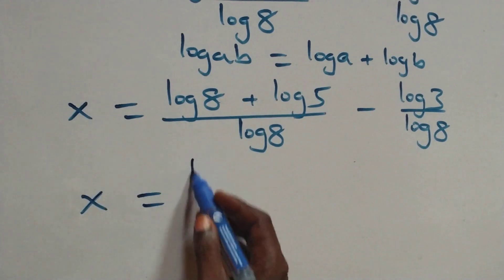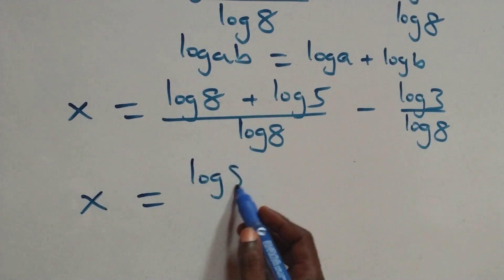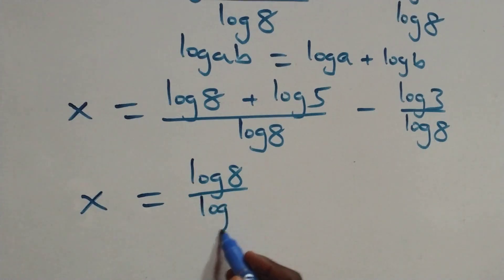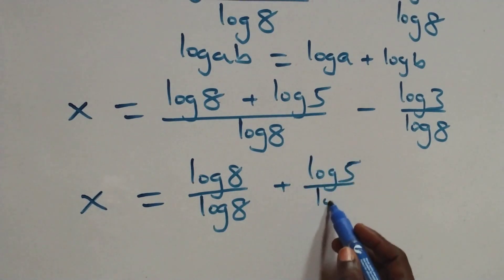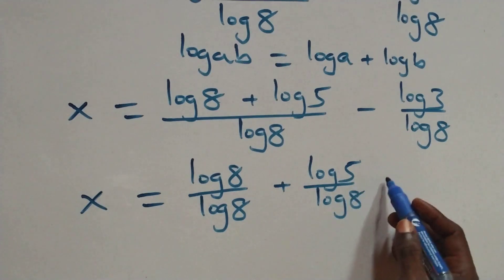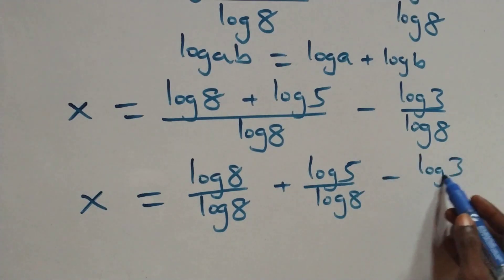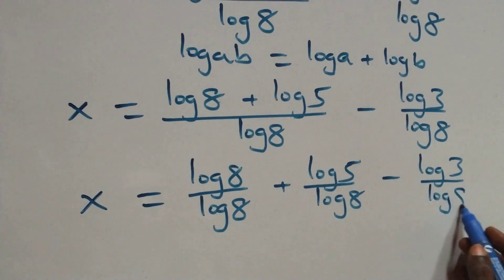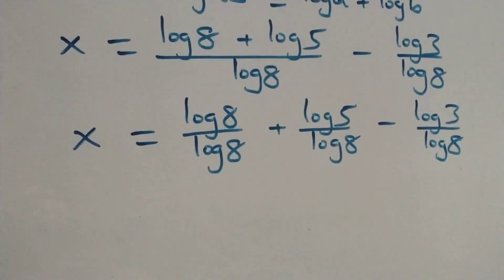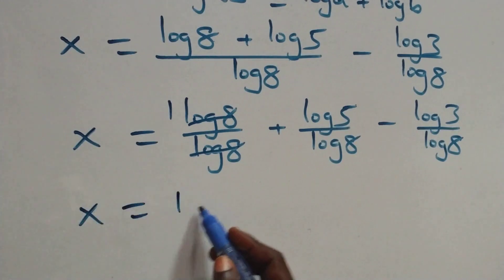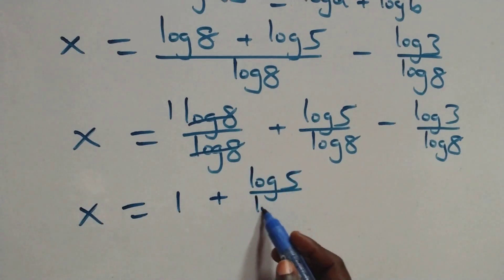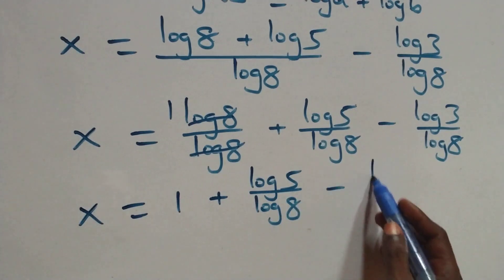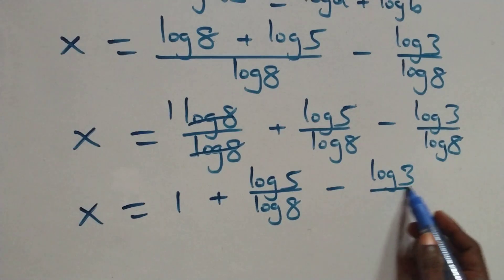All we have here becomes x equals to log 8 over log 8, plus log 5 over log 8, minus log 3 over log 8. Here log 8 cancels each other, and we have 1 left, which implies x equals to 1 plus log 5 over log 8 minus log 3 over log 8.